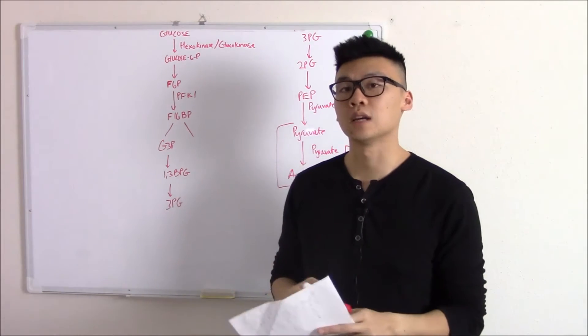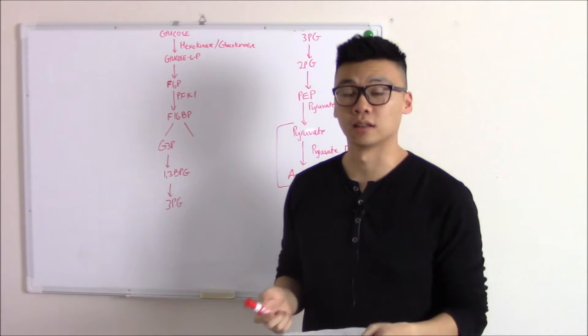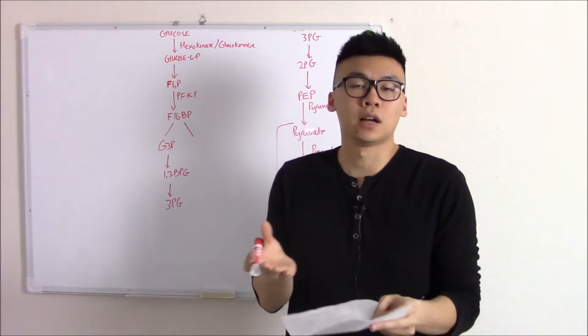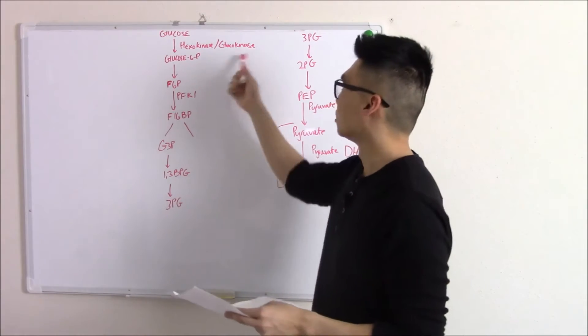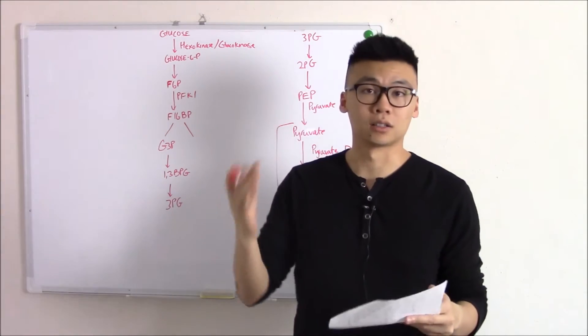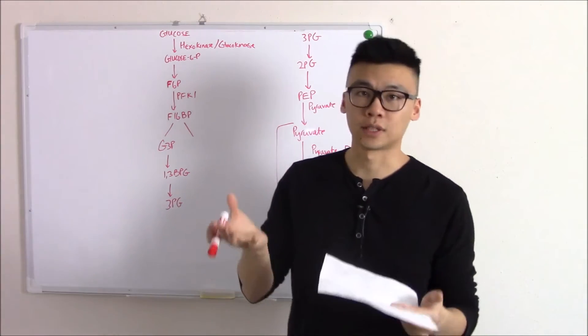The reason we have two enzymes is because they work in tandem with each other. Hexokinase is found in a lot of places and it's great for when you have low glucose. Glucokinase is found in your liver and your pancreas and it's great for when you have a lot of glucose. So depending on your level, they work in tandem.